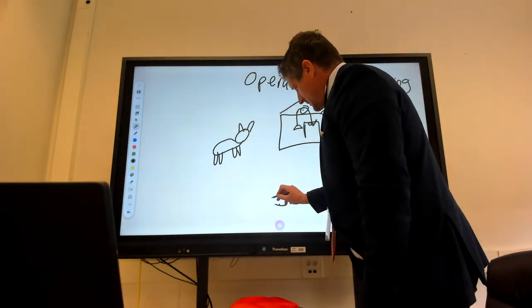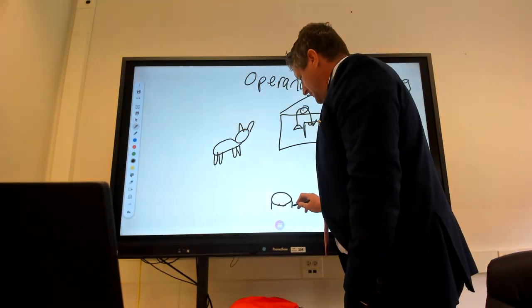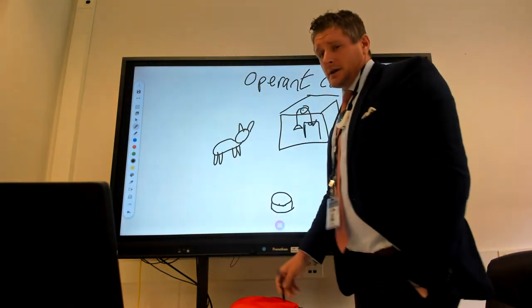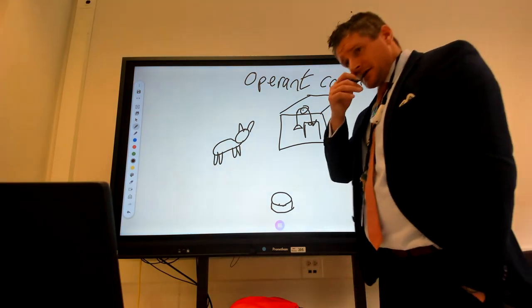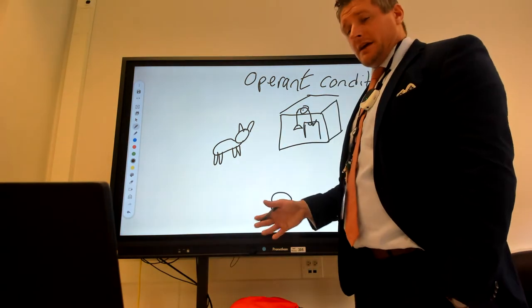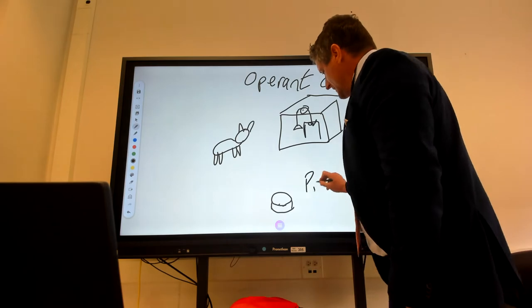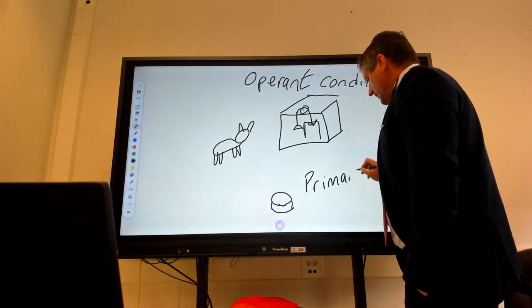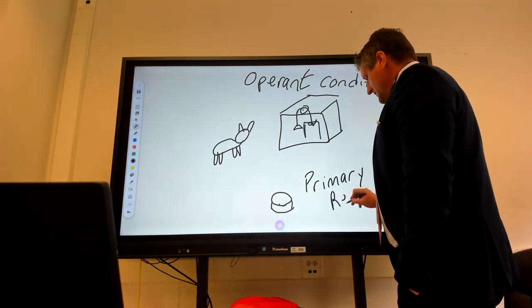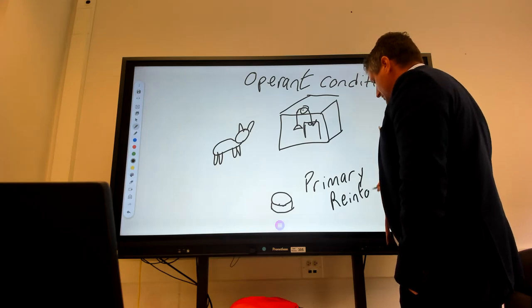And so what they did is they took my little thing down here and said I'm going to put food outside of the box. Cat wants food, and so that's going to reinforce the behavior of escaping. Because the cat naturally wants this, we call that a primary reinforcer. So a primary reinforcer is something you naturally would desire.